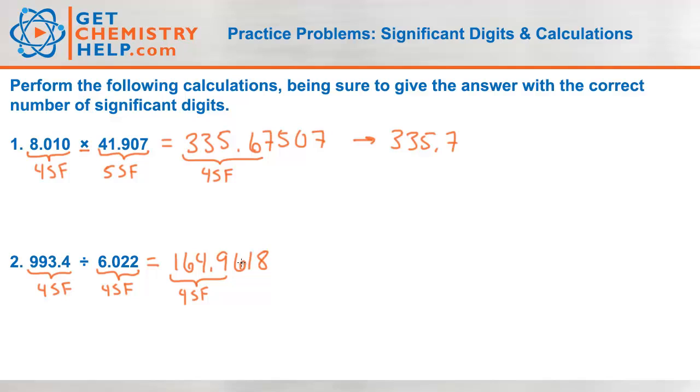So 164.9. I have to round that off to four. The six tells me to round up. This is interesting. The six makes that nine go to 10, so it would also round up that one, too. I would get 165.0. Make sure you include the zero because it has to have four significant figures. So 165.0 would have four.